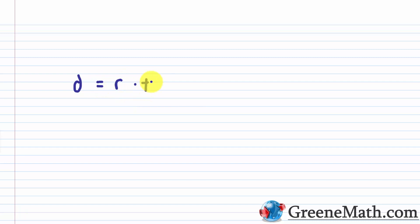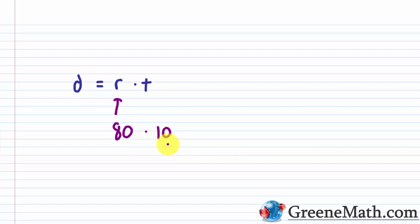For motion word problems, a lot of you who took lower level algebra courses got a lot of experience with these. It's a very common type of word problem. They rely on the understanding of the formula D, or distance, equals R, the rate of speed, times T, the time traveled. Think about being on a road trip where your rate of speed is 80 miles per hour for 10 hours. You just multiply: 80 times 10 is 800, so your distance is 800 miles.